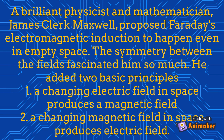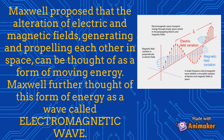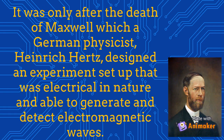A brilliant physicist and mathematician, James Clerk Maxwell, proposed electromagnetic induction to happen even in empty space. The symmetry between the fields fascinated him, so he added two basic principles: one, a changing electric field in space produces a magnetic field; two, a changing magnetic field in space produces an electric field. Maxwell proposed that the alteration of electric and magnetic fields generating and propelling each other in space can be thought of as a form of moving energy — a wave called the electromagnetic wave.